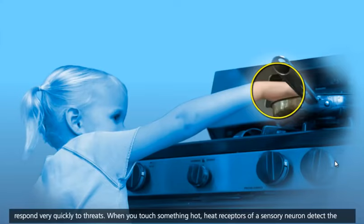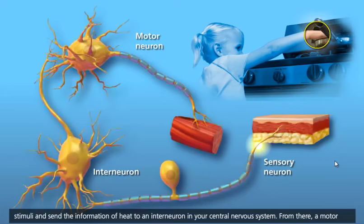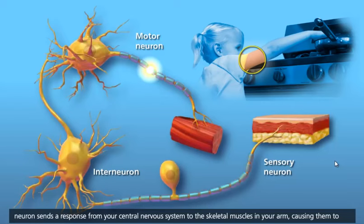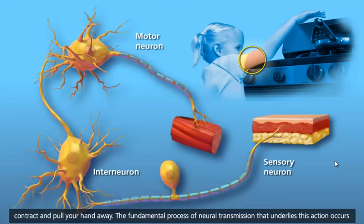When you touch something hot, heat receptors of a sensory neuron detect the stimuli and send the information of heat to an interneuron in your central nervous system. From there, a motor neuron sends a response from your central nervous system to the skeletal muscles in your arm, causing them to contract and pull your hand away.